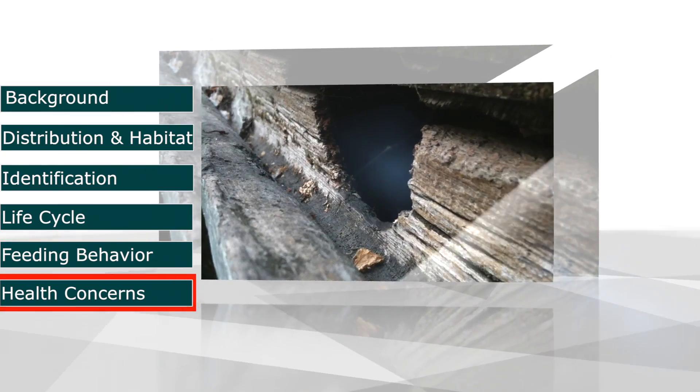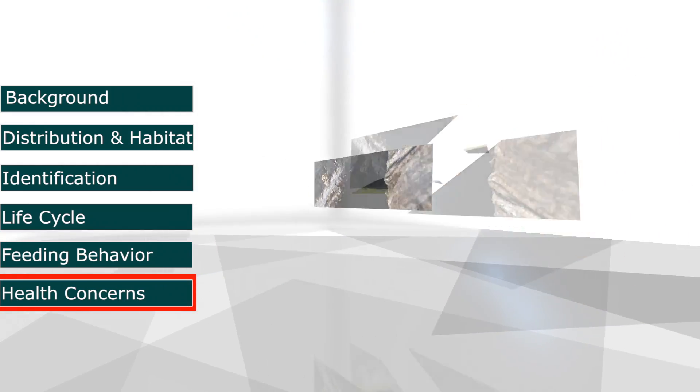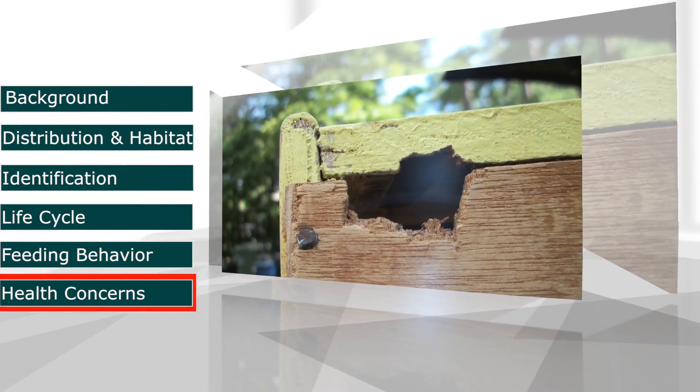Norway Rats are considered pests because they can cause damage to structures through their gnawing and eating, and are also vectors of diseases.